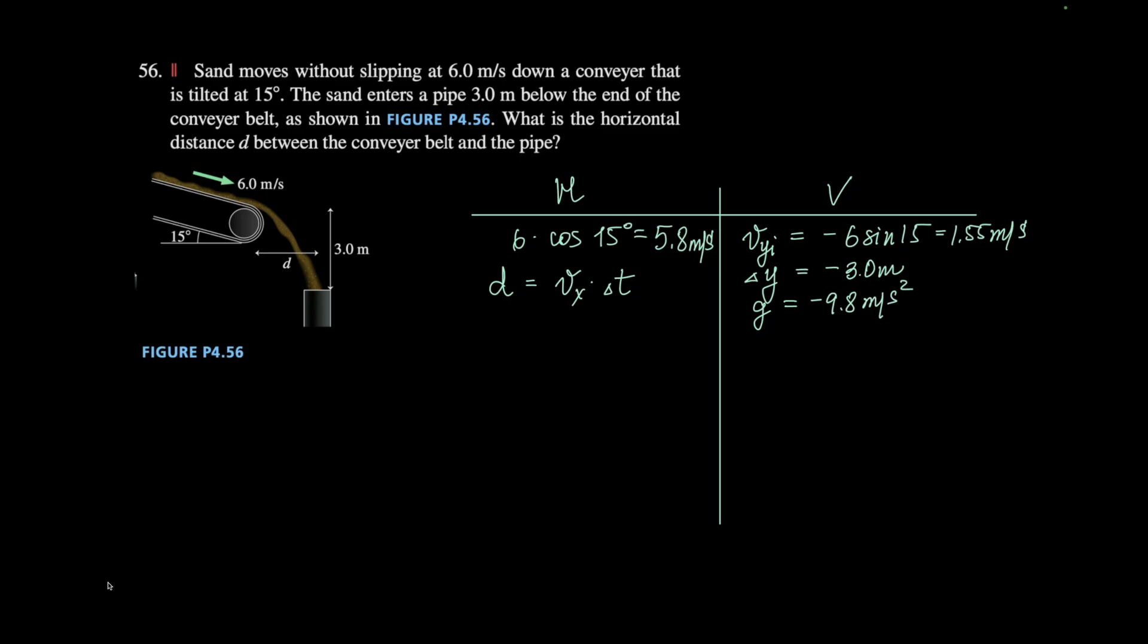Everything is negative. I forgot the minus in here. Consider positive direction going downward so I don't have to worry about the minuses. So displacement, which is 3, will be equal to the initial, which is 1.55 times time plus 4.9 times time squared.